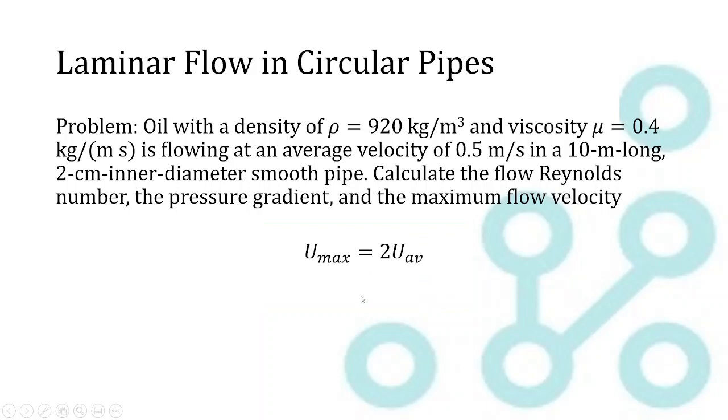And finally, we're going to calculate maximum flow velocity, which is really straightforward. The maximum flow velocity for laminar fully developed flow in a pipe is always double the average velocity, which is given to us in the problem. So we just double that, and we end up with a maximum flow velocity of one meter per second.